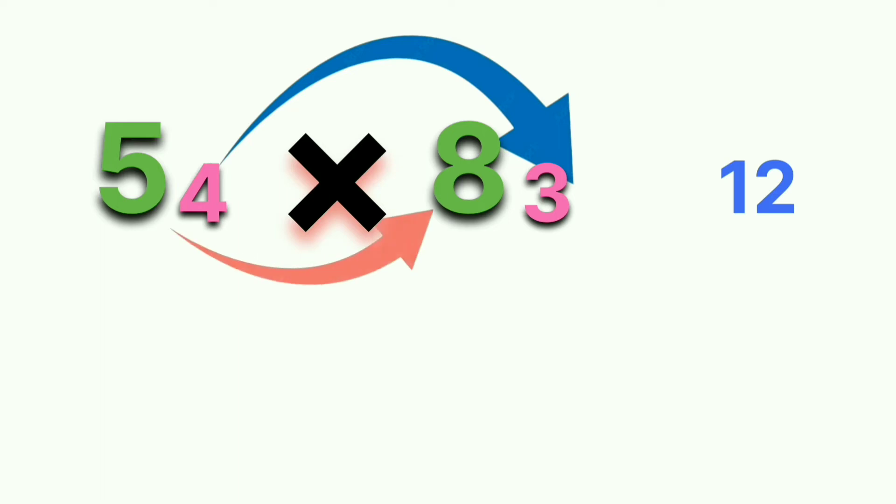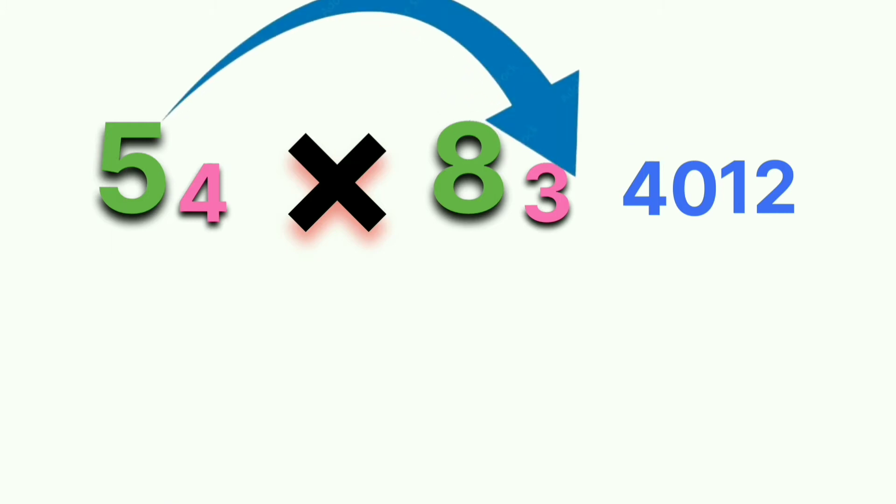Then 5 into 8 equals 40. You have to write 40 side up 12. After this process, you have to multiply again: 5 by 3 equals 15, 4 by 8 equals 32. Now you have to add this number: 15 plus 32 equals 47.